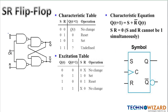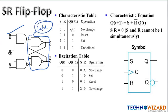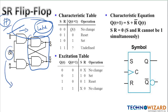First is the SR flip-flop. This is a latch — when we provide a clock signal to a latch, it becomes a flip-flop. The clock signal works like a trigger: it determines the time at which we want to trigger the flip-flop. This is our characteristic table, also known as the truth table.